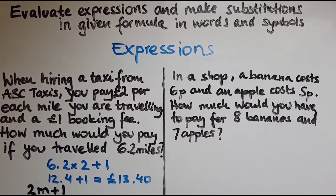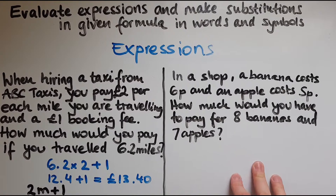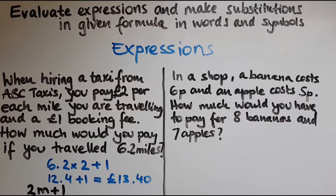So if it was 5 miles, it'd be 5 times 2, which is 10, plus 1 equals 11 pounds. Now let's look at another example: in a shop, a banana costs 6 pence and an apple costs 5 pence.